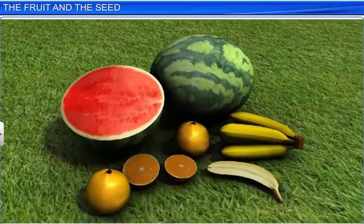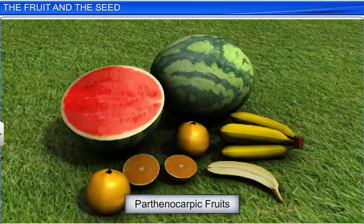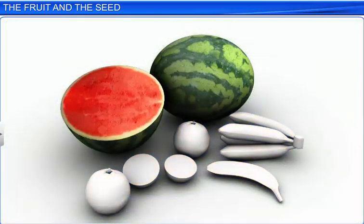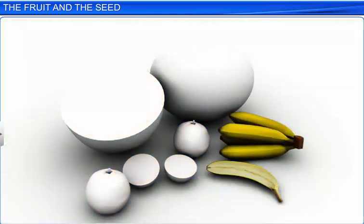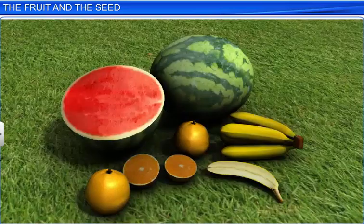However, certain fruits are formed without fertilization of the ovary and are therefore seedless. Such fruits are called parthenocarpic fruits, such as seedless watermelon, banana, and orange. Parthenocarpy can be a natural process or may be artificially induced.